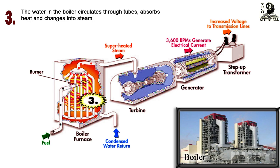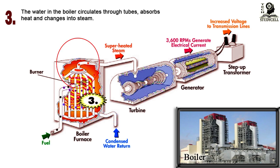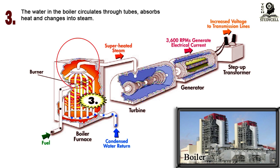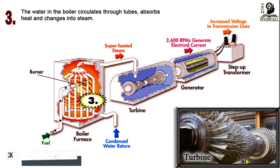The steam is then separated from the water inside a drum at the top of the furnace. The saturated steam is introduced into superheat pendant tubes that hang in the hottest part of the combustion gases as they exit the furnace. Here the steam is superheated to 1,000 degrees Fahrenheit to prepare it for the turbine.